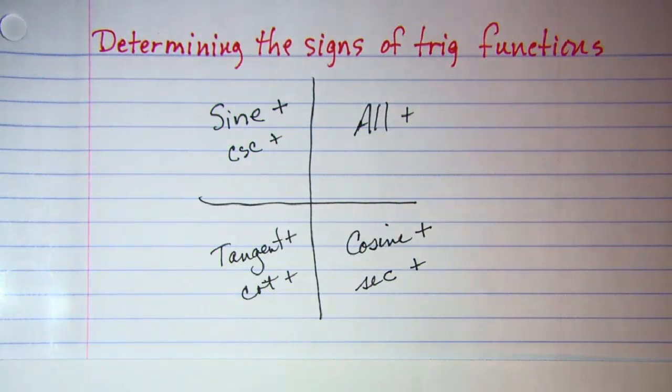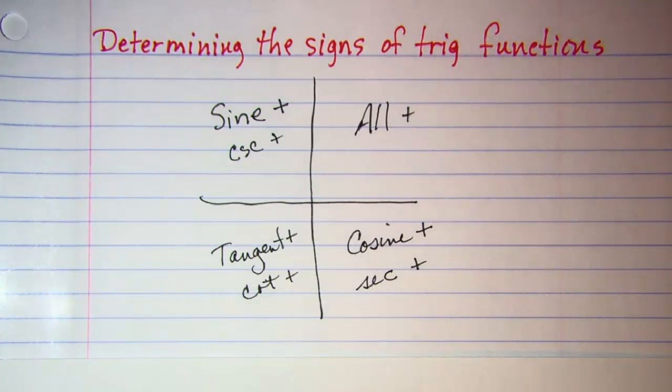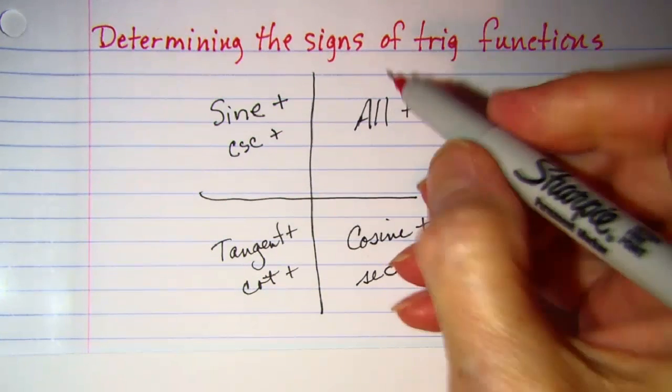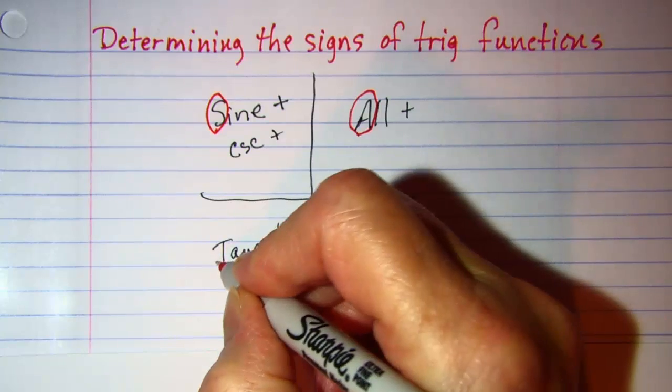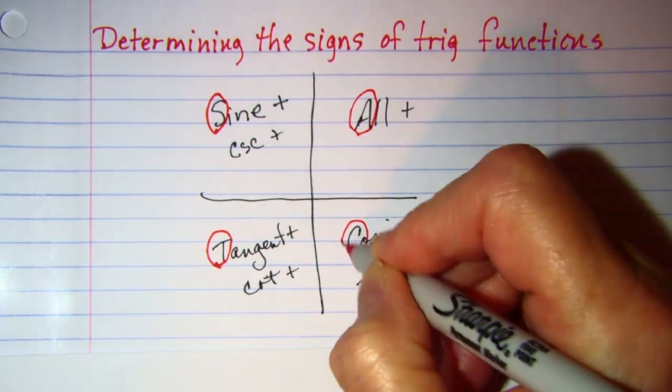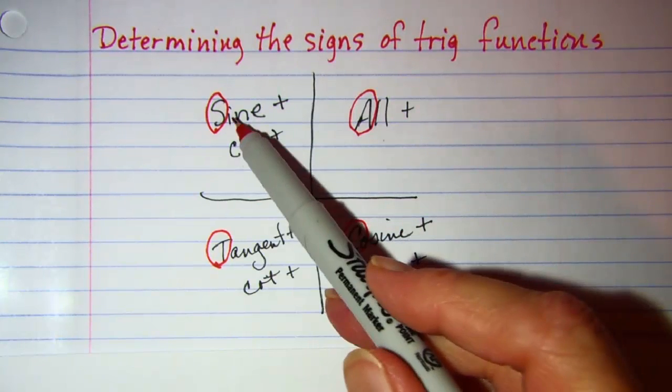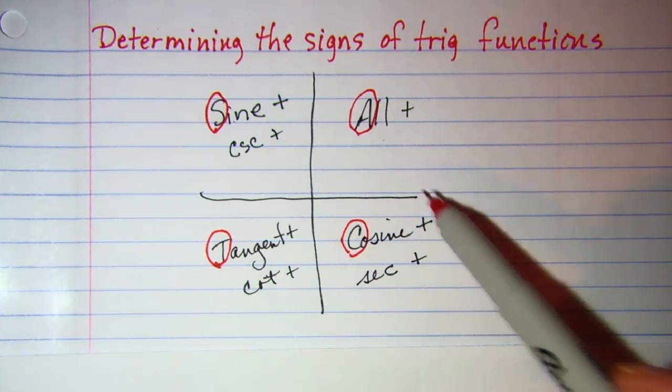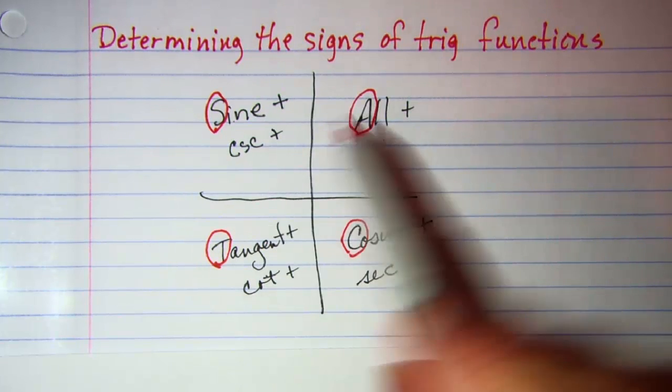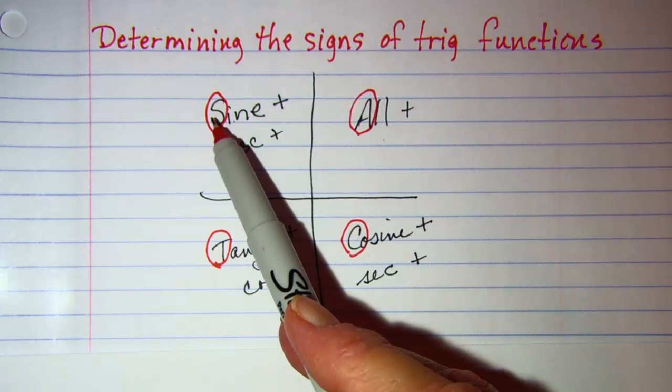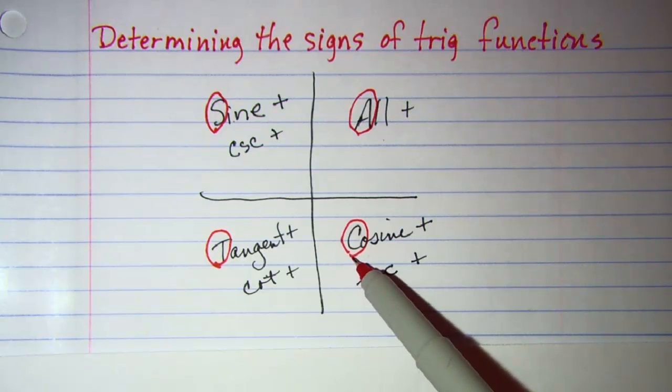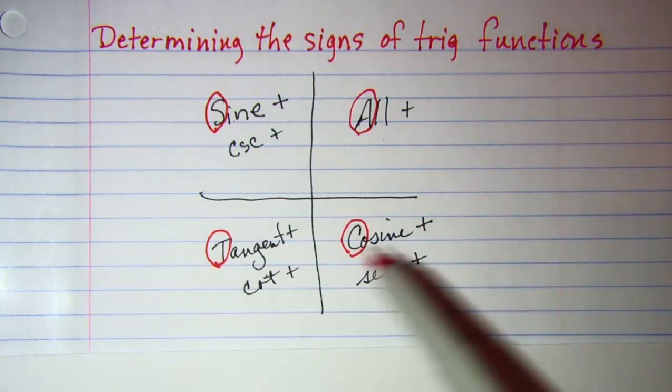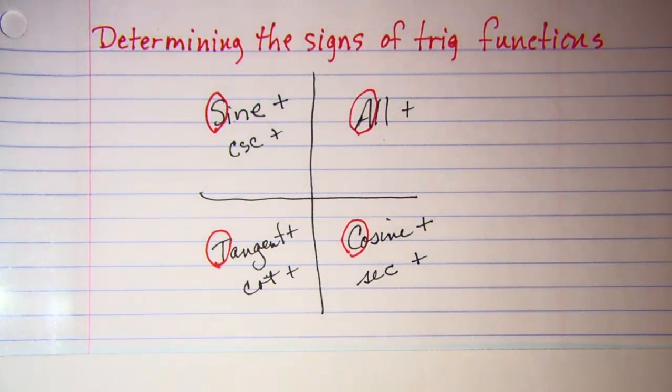So one way to remember this is the little saying if you take the first letter on each of these. All students take calculus. The A from all, S from students, T for take, and C for calculus. That is a reminder of which quadrants have positive trig functions.